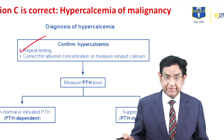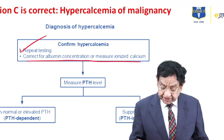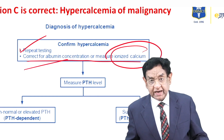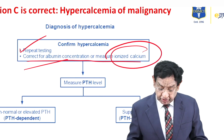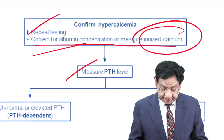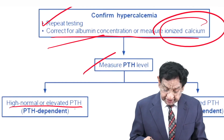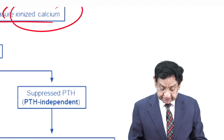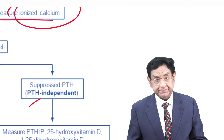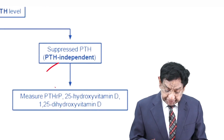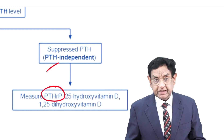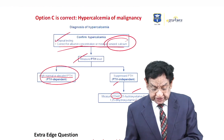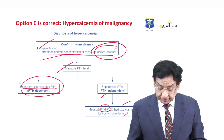There is a reason for repeated testing which I will discuss in the next slide. You must also correct for albumin concentration or measure ionized calcium — a very important point not known to most students. Once done, you check the PTH level. The PTH level may be normal, high normal, or elevated — this is called PTH-dependent hypercalcemia. If PTH is suppressed, it is PTH-independent. In that case, measure PTHrP, and also measure vitamin D levels. This is, in a nutshell, how to approach any case of hypercalcemia.